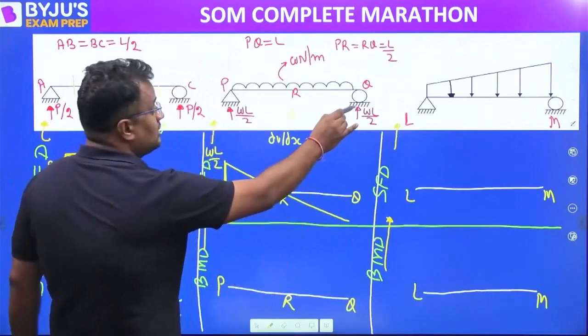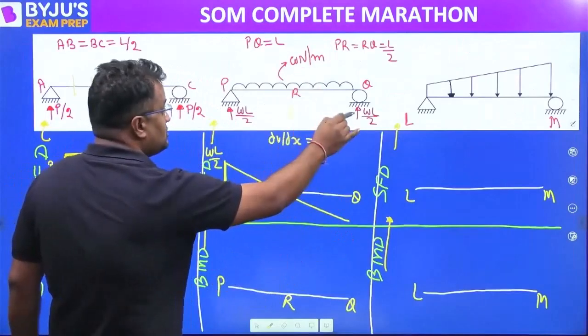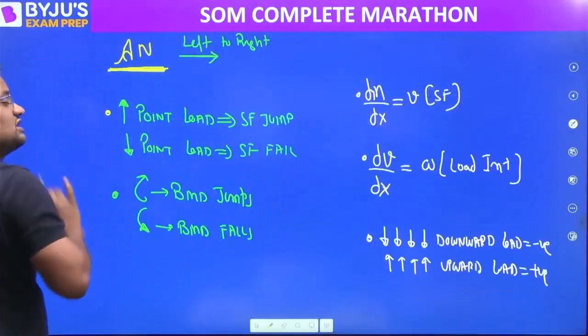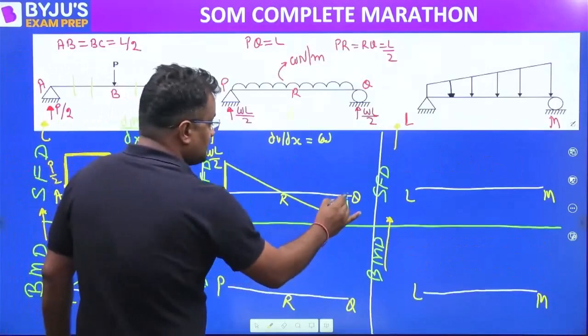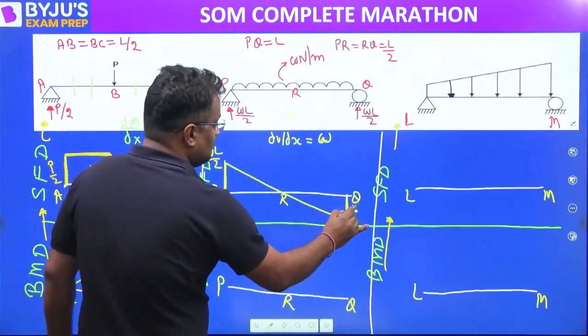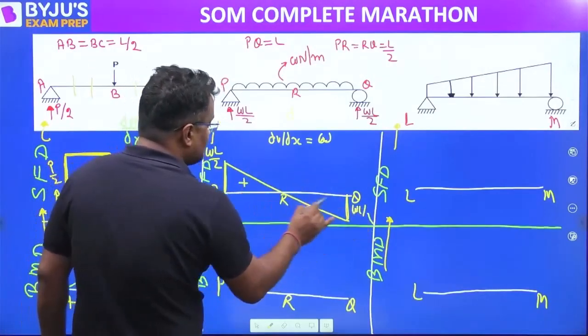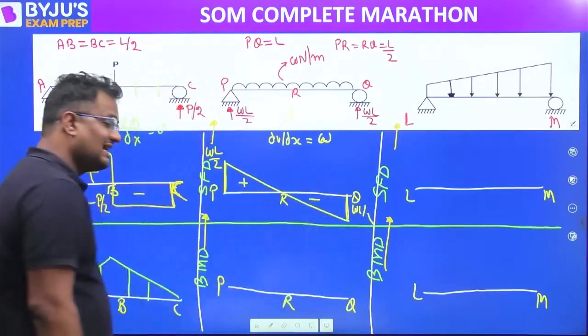Then there is an upper load WL/2 — upward point load — shear force jumps upward. So shear force is jumping by WL/2. This portion is positive and the other is negative.